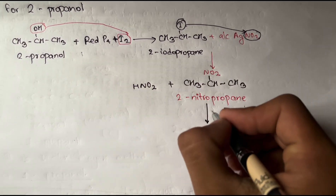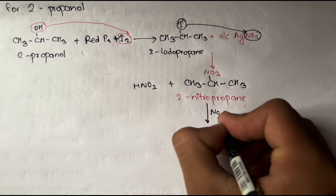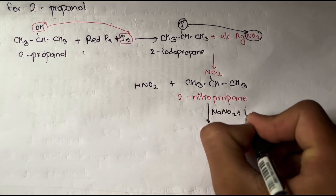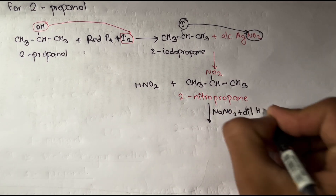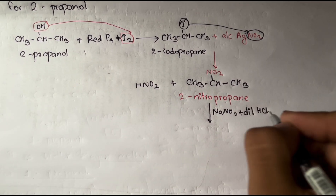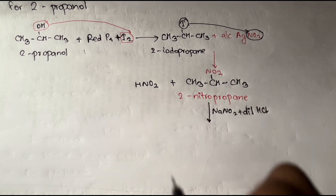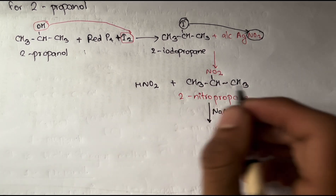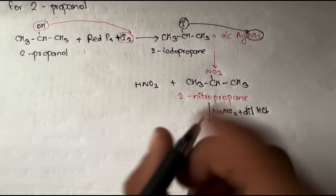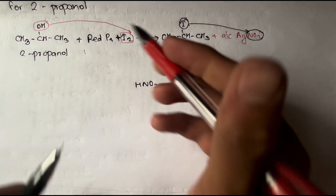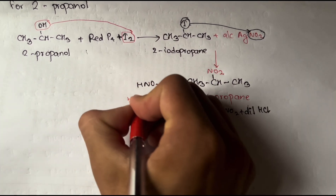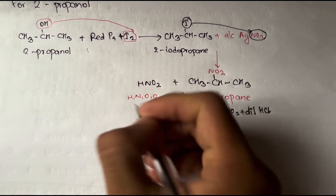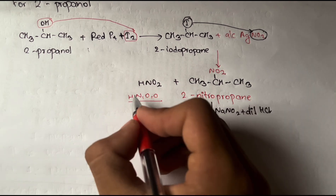For 2-nitropropane, we also do in-situ preparation of HNO2 using NaNO2 plus dilute HCl, with further loss of water molecule to give HNO2. This HNO2 reacts with 2-nitropropane in the next step.